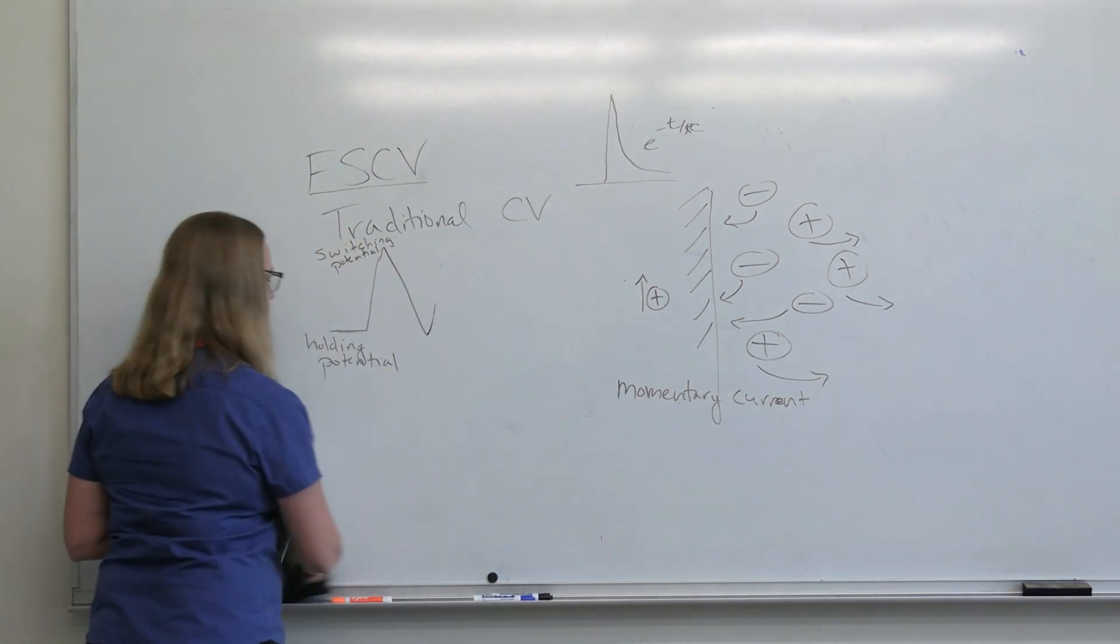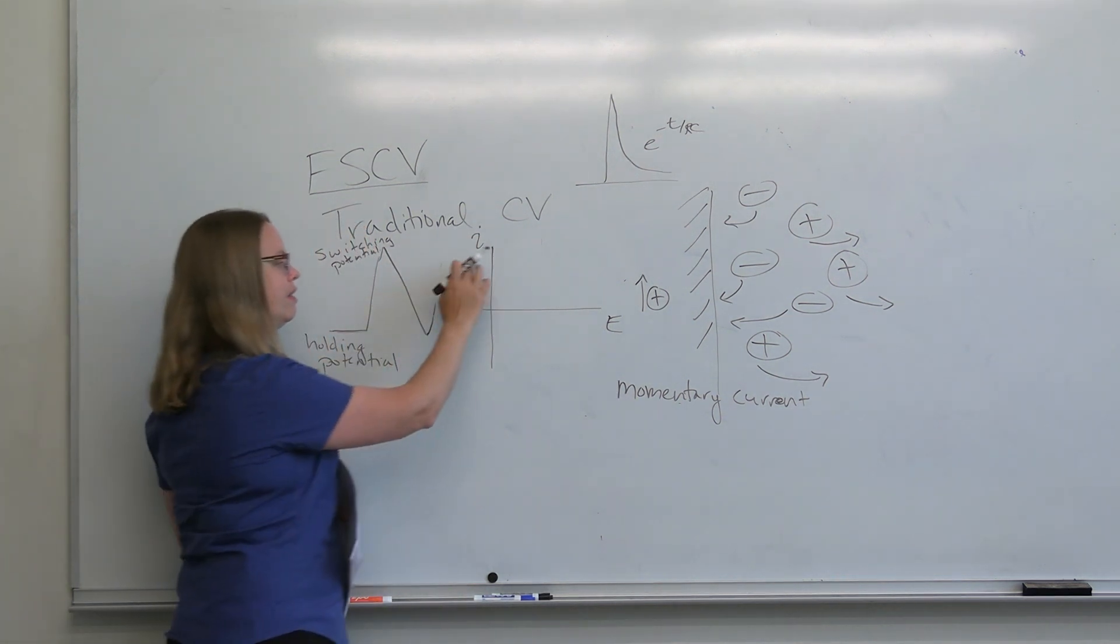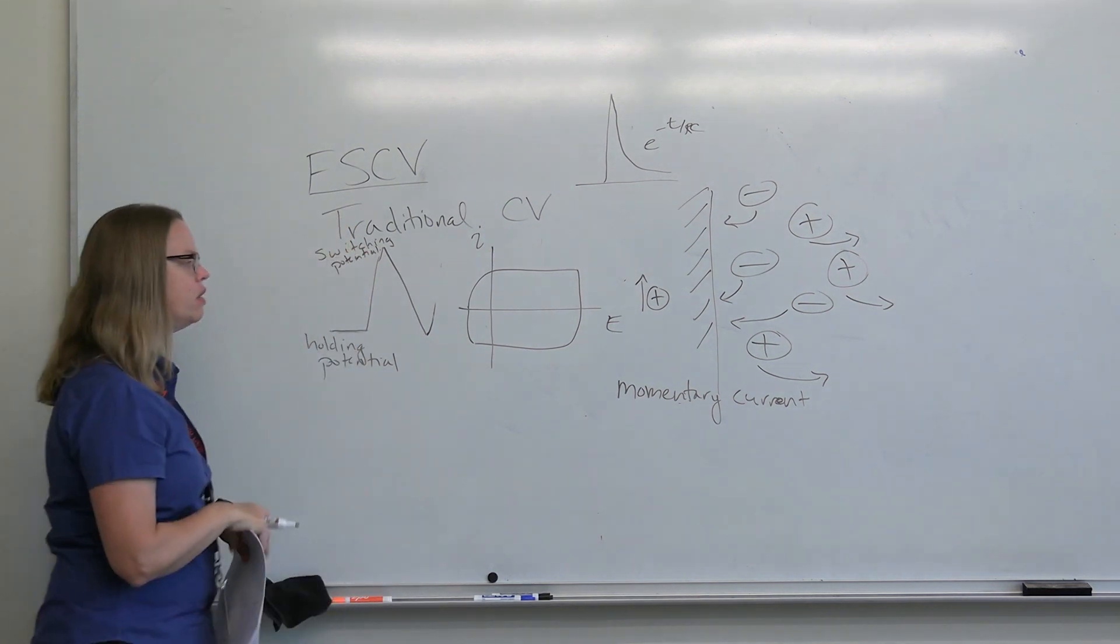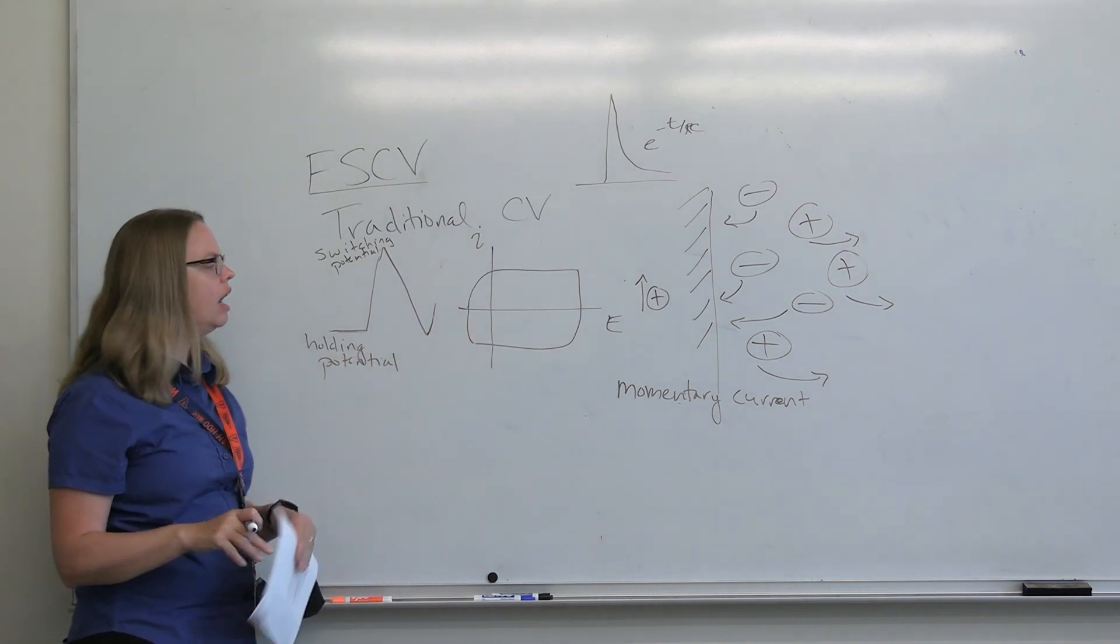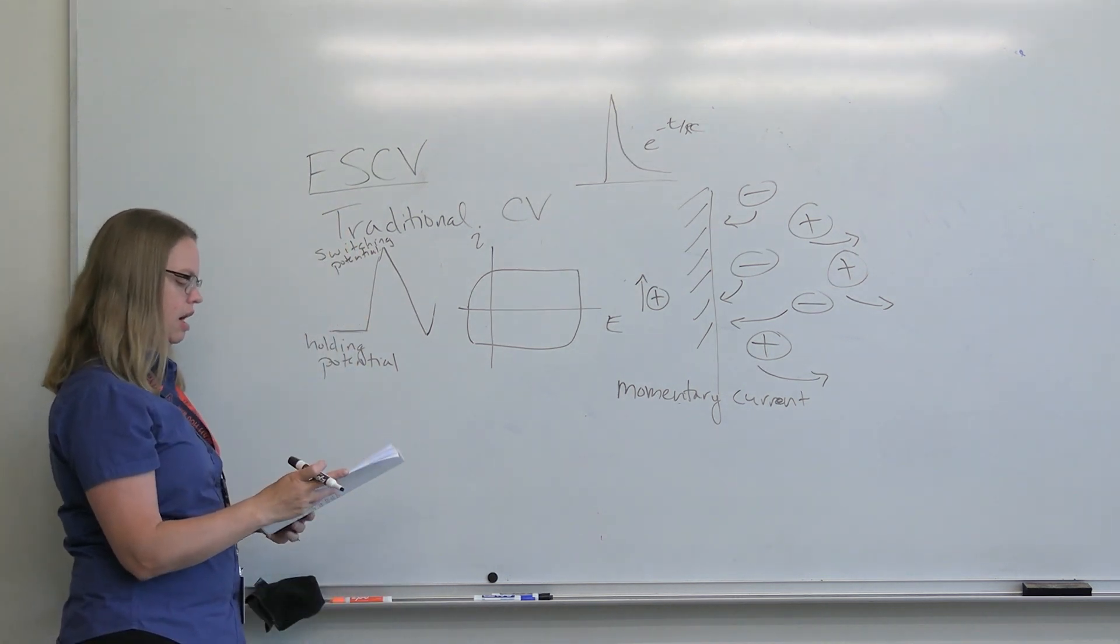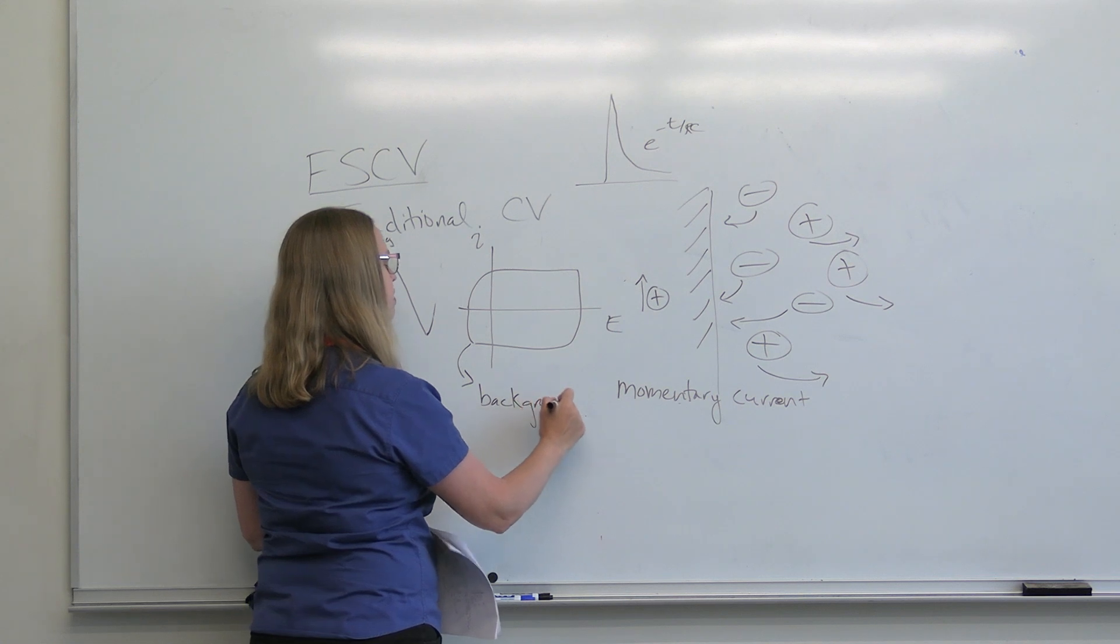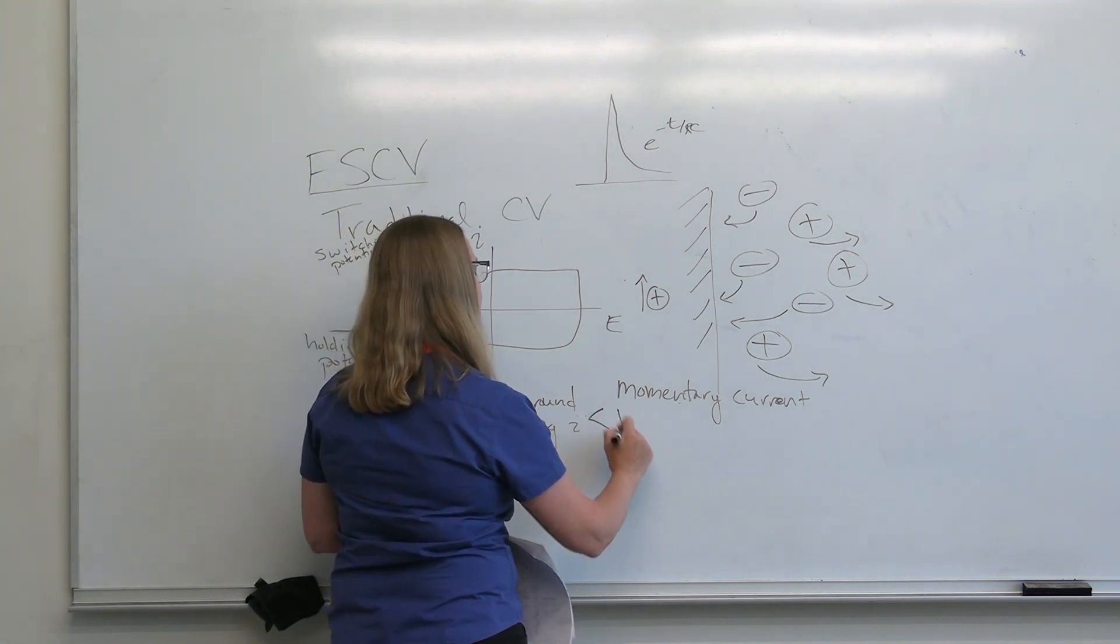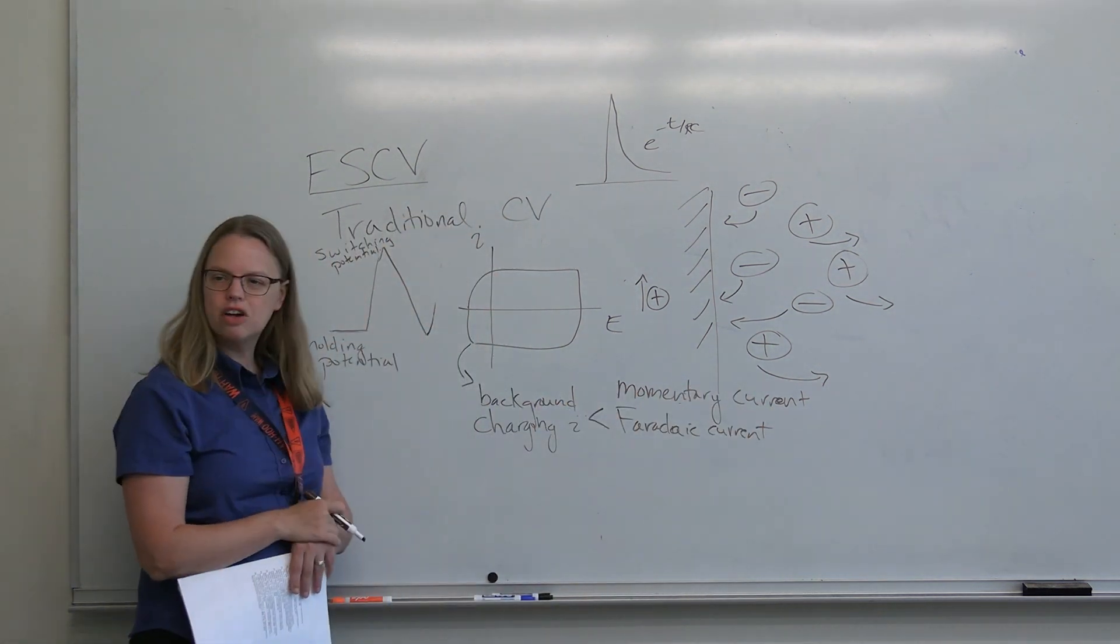In amperometry it went up and decreased with an e to the t over RC. That's still true here. But the problem is every time I change the voltage, I change the double layer a little bit and I change the amount of current that I get. So I don't get some steady state current that goes away. Instead, I get a current that looks like a capacitor. So the current looks something more like this. We want our background charging current to be much lower than our Faradaic current.